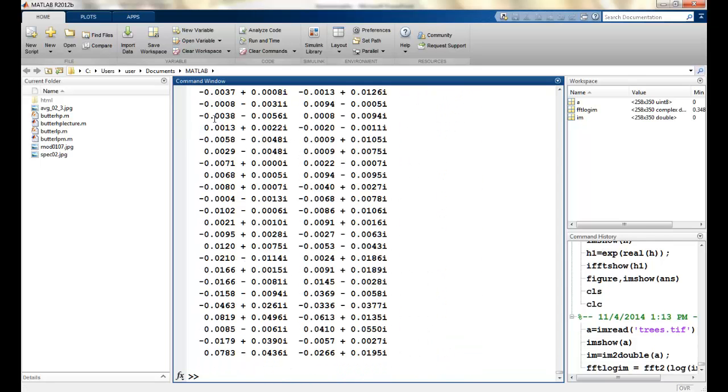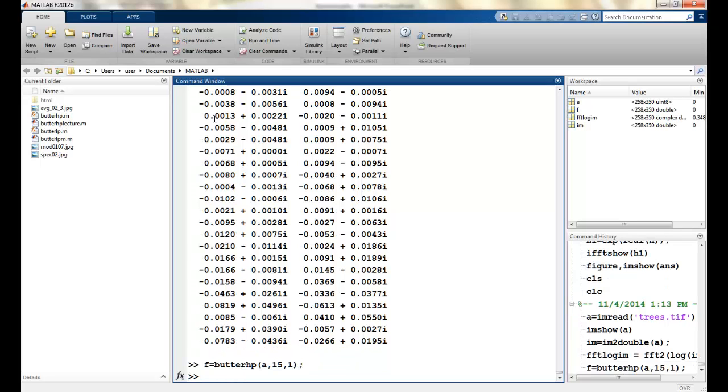Now once this is done, I will also create a high pass filter. I could use any high pass filter which we have seen till now. So I will take the Butterworth high pass filter. The image was A size, take D as 15 and the first order. You can revisit the lecture of high pass Butterworth filter to see this filter.